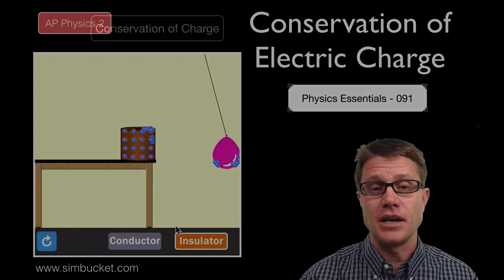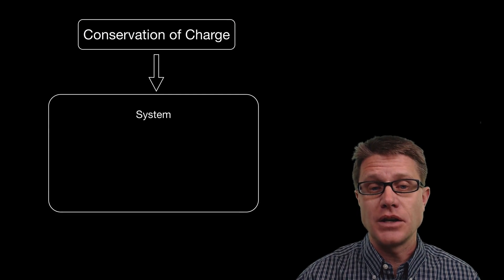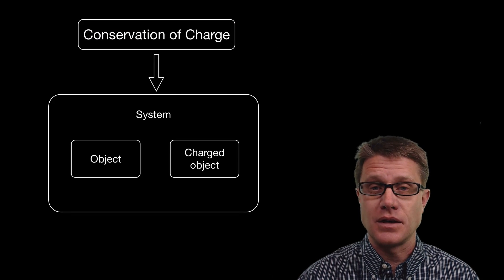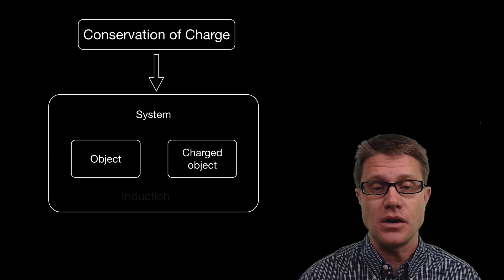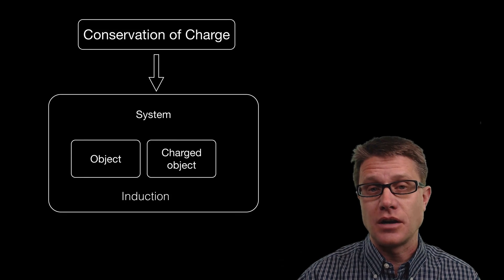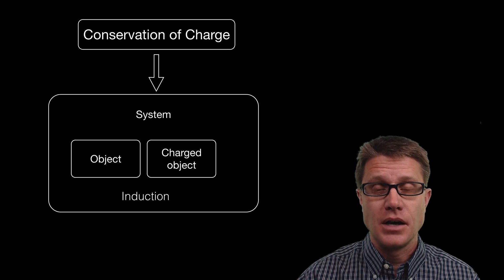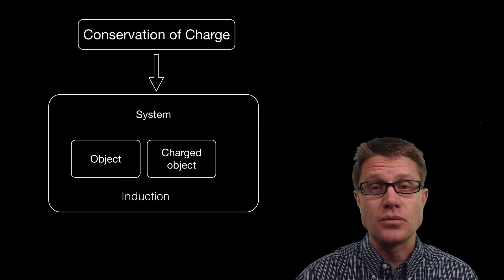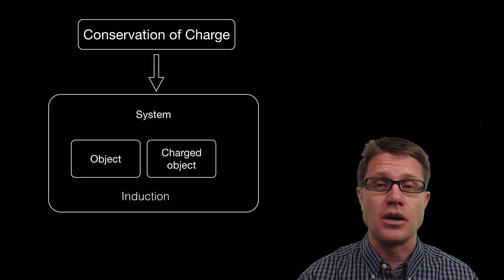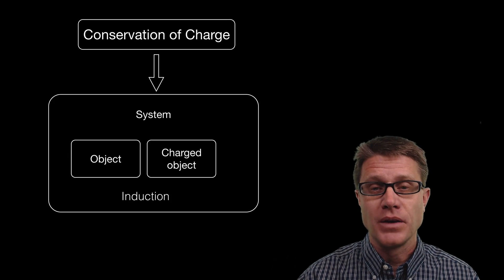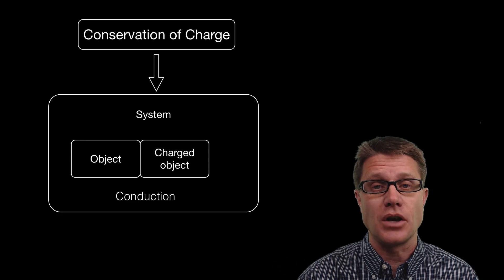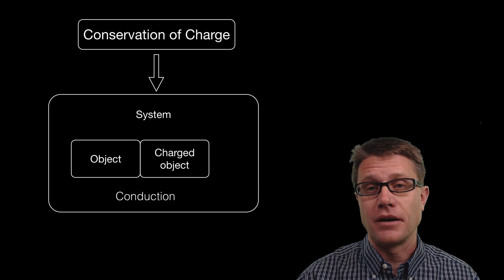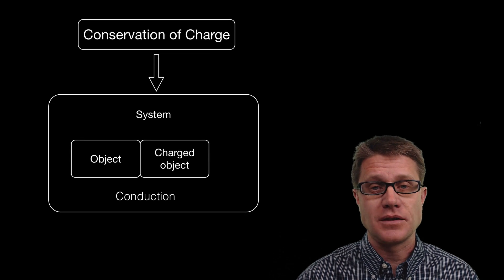But the number of charges that we have in this whole system is going to be conserved — it is going to remain the same over time. The conservation of charge in a system means that if we have a couple of objects, one neutral and the other charged, if I bring that charged object next to the neutral object I can induce a charge in it. But we are not bringing in new charges, we are not losing charges — the amount of charges in the system is going to remain the same. Even if I touch that other object and there is conduction, the total amount of charges in that system is going to remain the same.